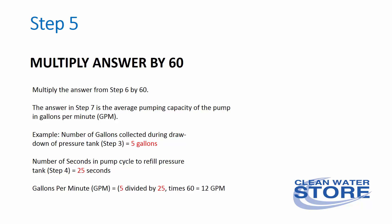Let's say you were able to collect five gallons out of your pressure tank until the pump turned back on. Next, you timed that it took 25 seconds for your well to fill up the pressure tank and shut off. So you have five divided by 25, times 60, equals 12. Your well pump can pump approximately 12 gallons per minute.